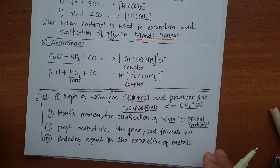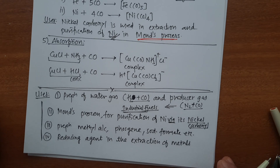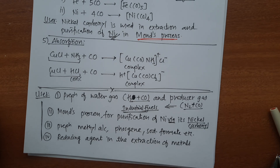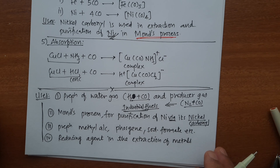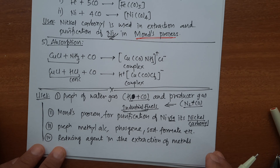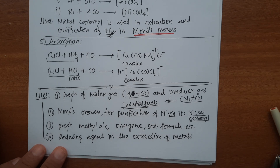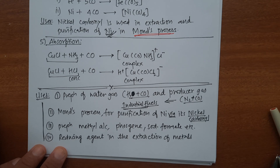So this is all about carbon monoxide — remember the structure, methods of preparation, and the properties discussed. This was the first oxide of carbon. In the next video, we will look at the preparation, properties, structure, and uses of carbon dioxide. Okay, thanks.